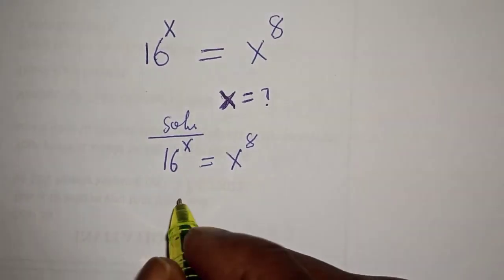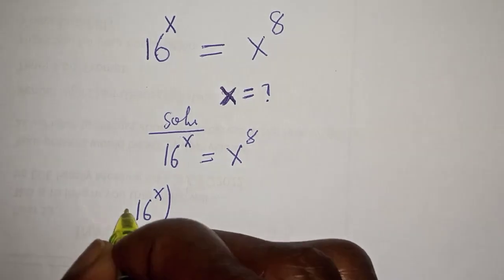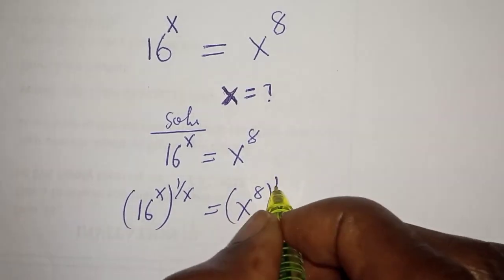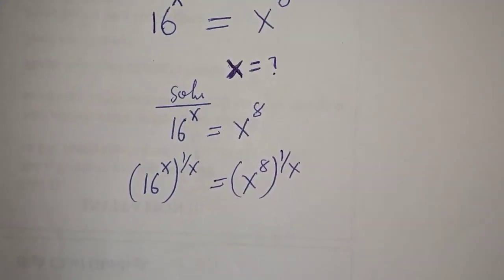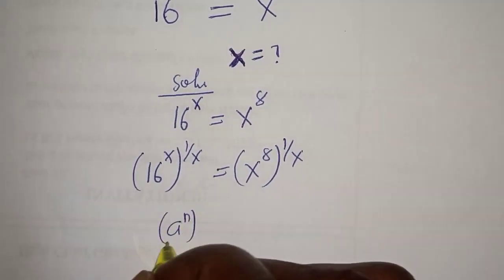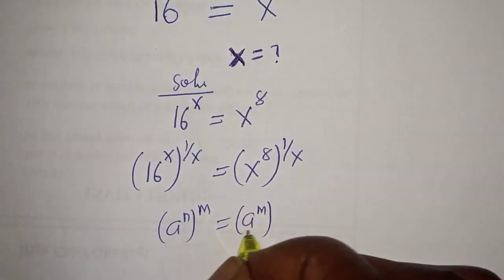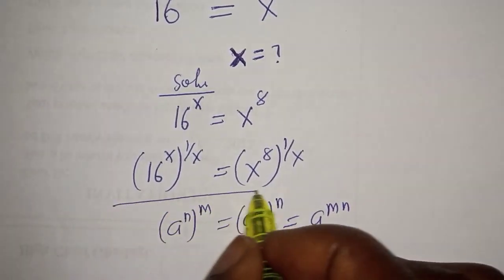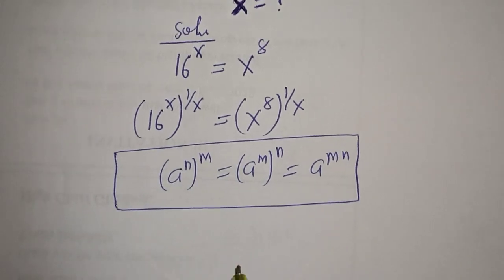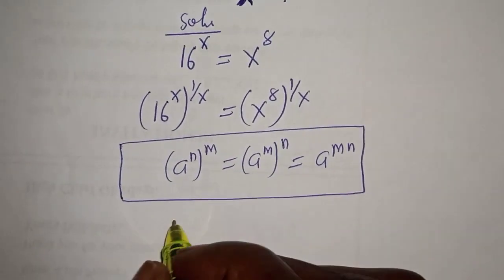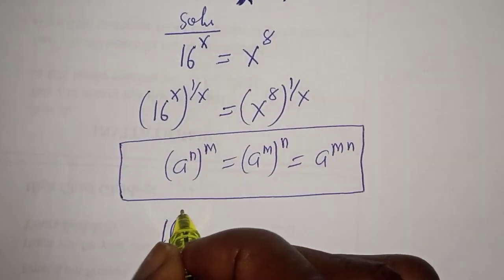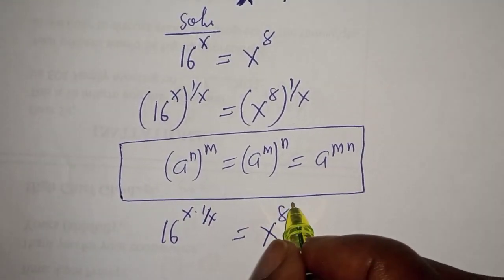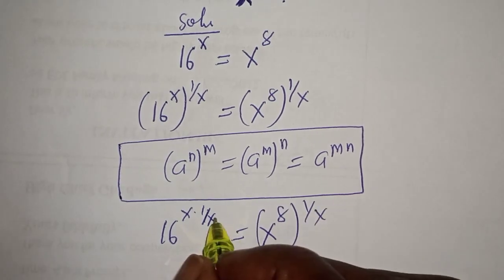Let's multiply the exponent of both sides by 1 over s. That is, 16 raised to power s, to the power of 1 over s, is equal to s raised to power 8 to the power of 1 over s. If you have a raised to power n to the power of m, this is equal to a raised to power m times n. So this can be written as 16 raised to power s multiplied by 1 over s, is equal to s raised to power 8 to the power of 1 over s. This will cancel this.